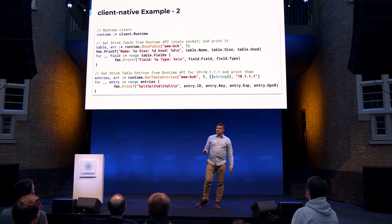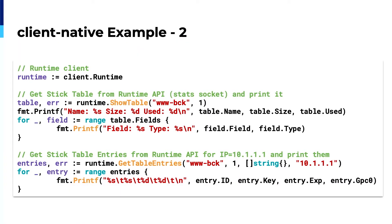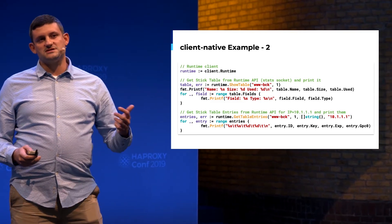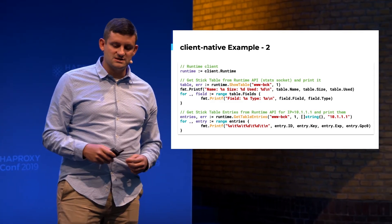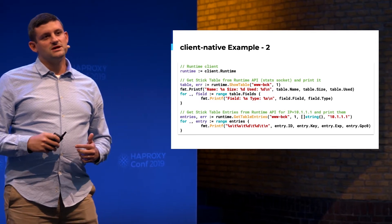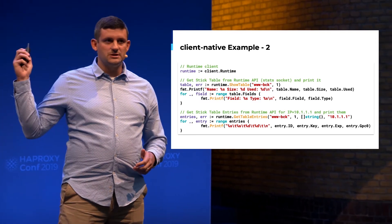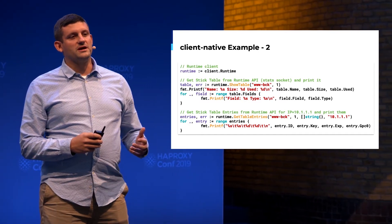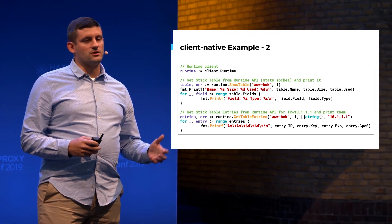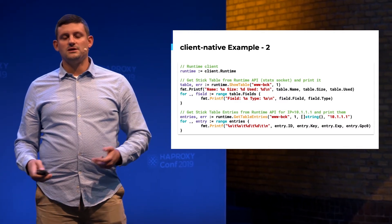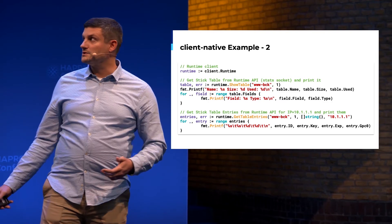We created a stick table in the previous example, and now we can use the Runtime API to inspect it. We can use the ShowTable call to describe the table — it gives us the name, size, used capacity. The second call, GetTableEntries, returns all entries in that stick table. With those two examples you can see how to use client native and the models package in your own Go application to monitor HAProxy statistics and stick table entries, then react by changing the configuration in the runtime or config file and reloading HAProxy.